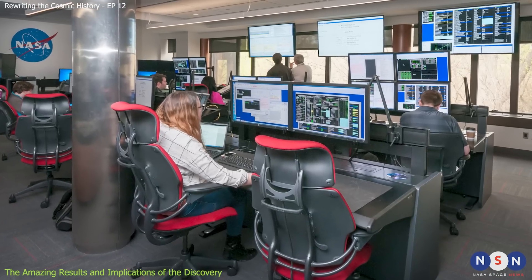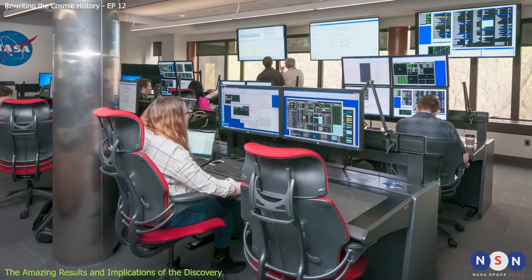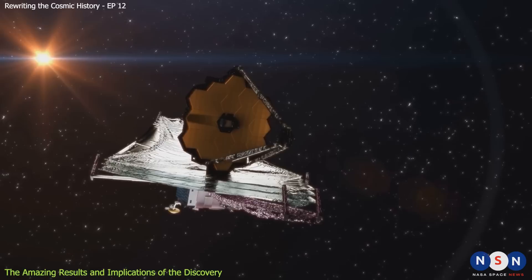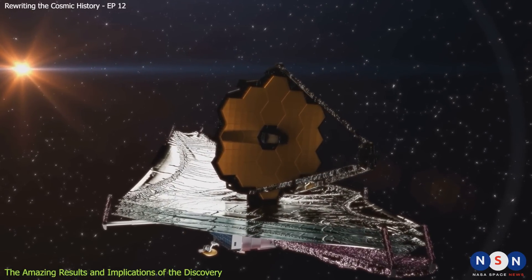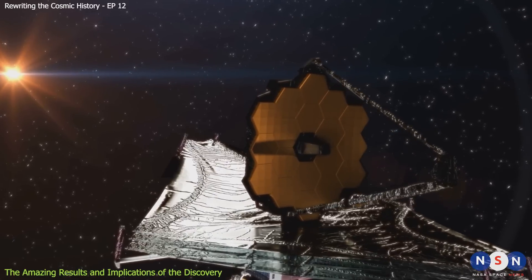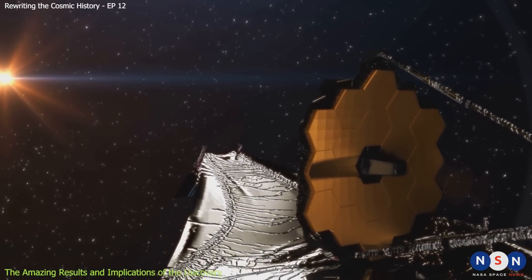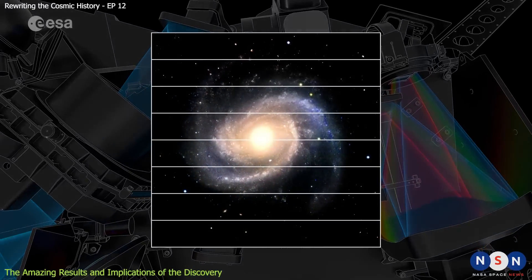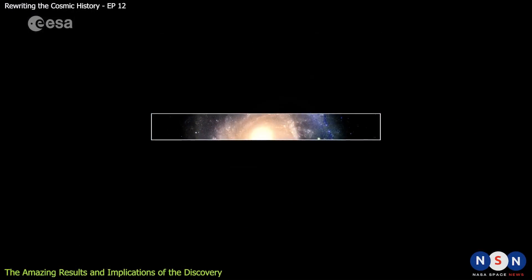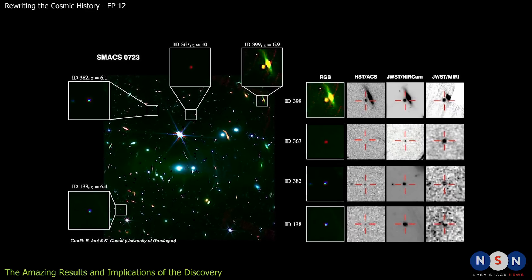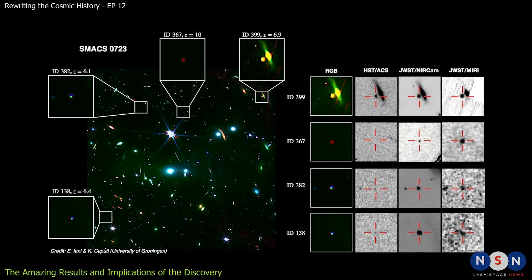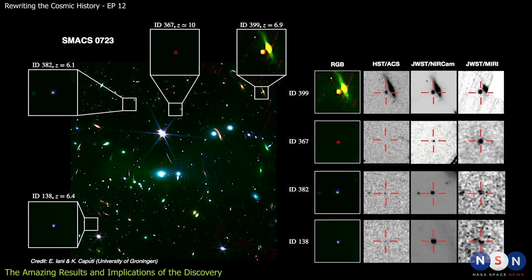To reduce noise and contamination, MIRI and its team used several techniques and methods. For example, they used dithering, which is moving the telescope slightly between exposures to avoid detector defects and improve image quality. They also used spectral extraction, which is separating the spectrum of each galaxy from the surrounding noise. They also used line identification, which is matching the observed emission lines with known features and redshifts.